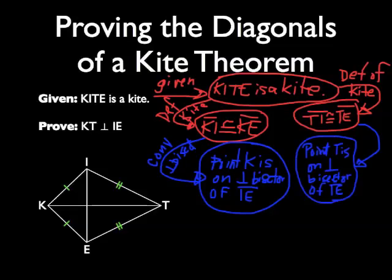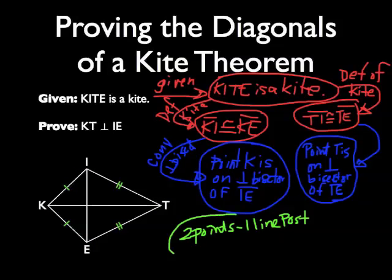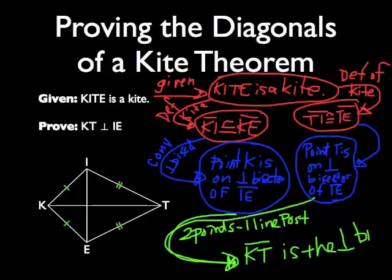Now, wait a minute. Point K and point T are both on the perpendicular bisector of IE. Do you remember a postulate clear back in chapter 1 that said, two points determine a line? That was the two points, one line postulate. And notice that I have two points. One is K and the other one is T. And they are both on the perpendicular bisector of segment IE. That means that segment KT, those two points, is the perpendicular bisector of segment IE.